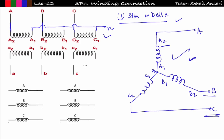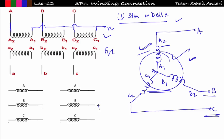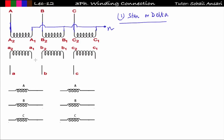Both the circular and linear representations of the star connection are the same — one is represented with 120-degree phase-displaced phasors. In exams you may get Figure 1 (triangular form) or Figure 2 (linear form), so you should know how to make both. The star connection can be drawn similarly for the secondary winding.